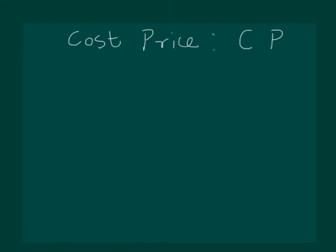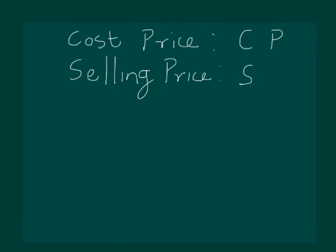The other important quantity that we need to understand is the selling price of an object. Selling price of an object shall be denoted by SP. Now we need to understand the profit of the object.